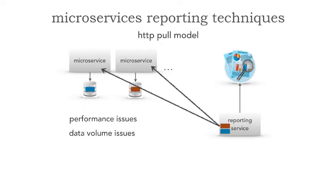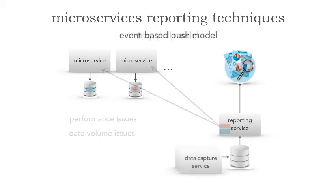We kind of have a problem with reporting in microservices ecosystems, don't we? Because we've split apart the database. The problem is we still need to aggregate across those databases. Either we get the data or we ask for it. Is there another option? And in fact, there is.